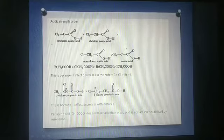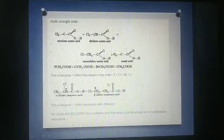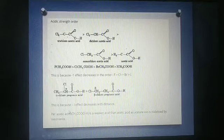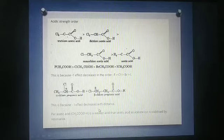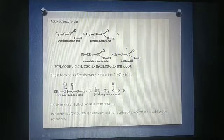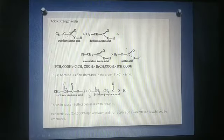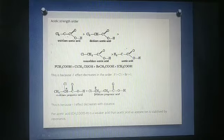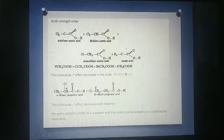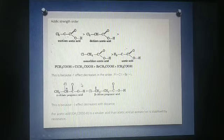This is alpha chloropropionic acid and this is beta chloropropionic acid. Alpha chloroacetic acid is more stronger because minus I effect decreases with distance. This is alpha means you can see the chlorine is more close to COOH group. And this chlorine in beta position. So, this is little bit in distance. Alpha chloropropionic acid is more strong.